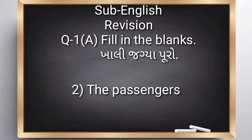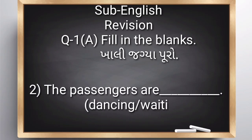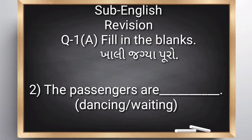Second: 'The passengers are blank.' Option: dancing or waiting. Students, where do you see the passengers? We see the passengers at the bus station, railway station, and airport. What do they do there? They are waiting there for the bus, train, or aeroplane.